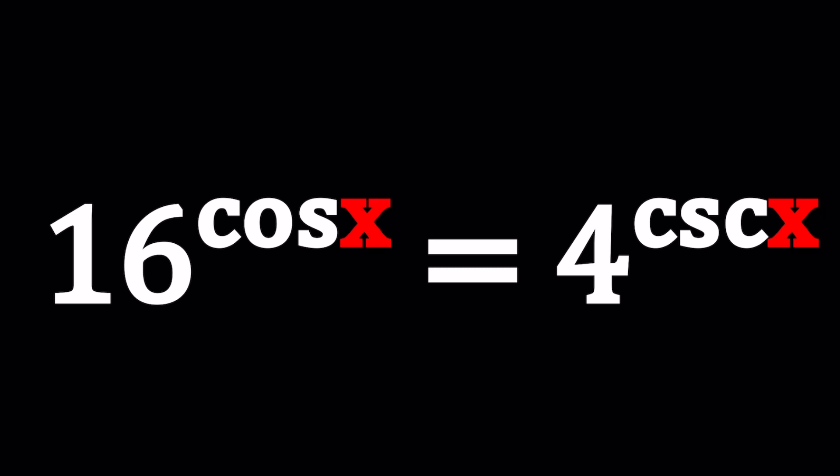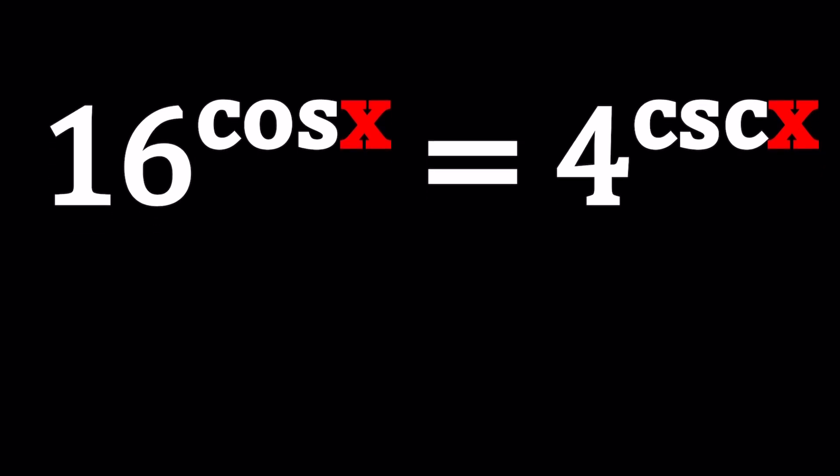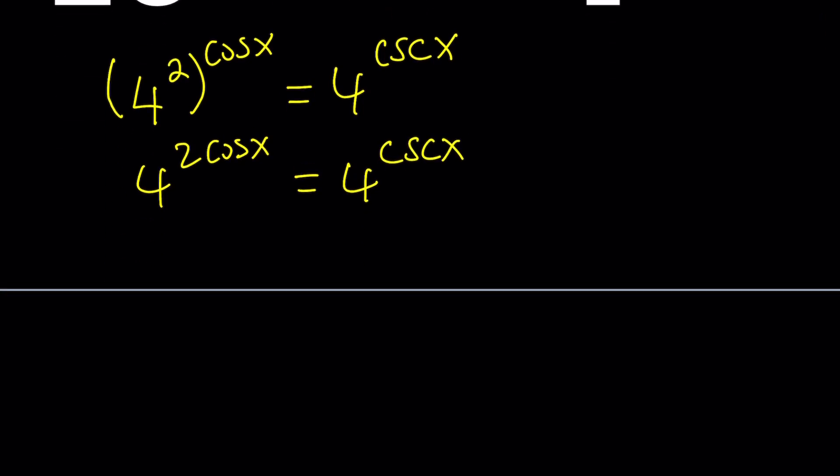First of all, I want to get rid of the exponents and make this a trigonometric problem. How can I do that? I have 16 and 4 that are friendly bases, right? They get along well. So we're going to replace 16 with 4 to the second power. And of course we're talking about the real solutions here. In the case of complex solutions, that's another story.